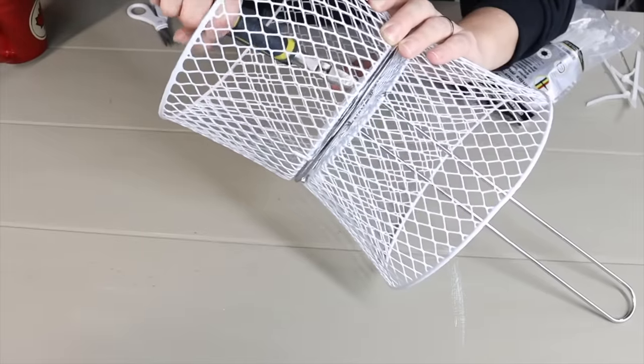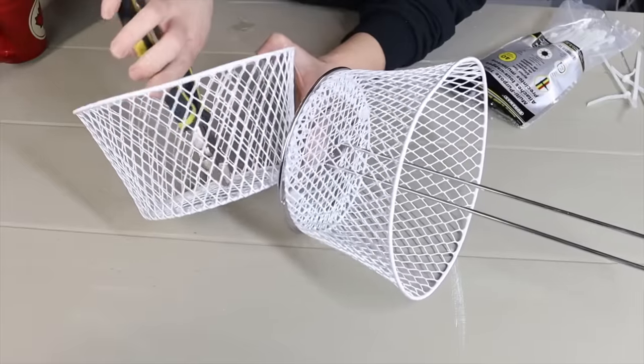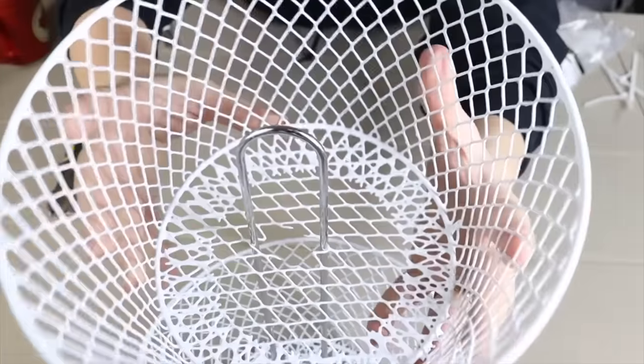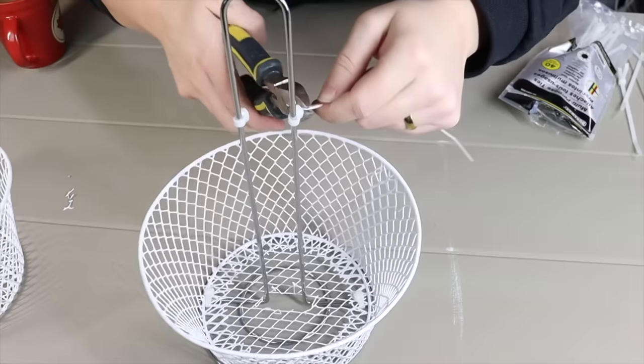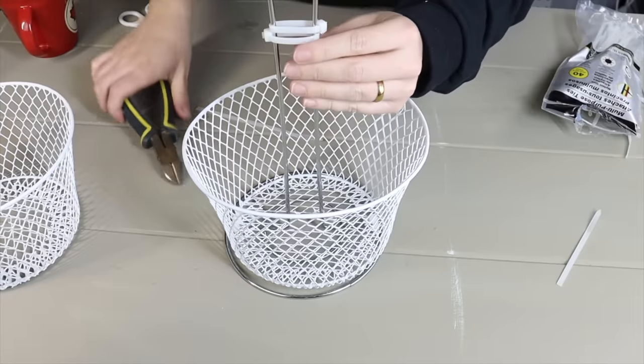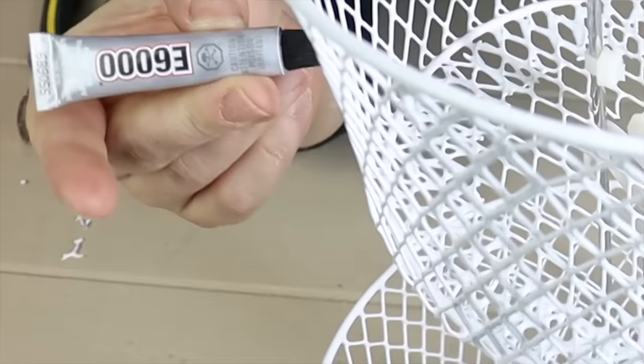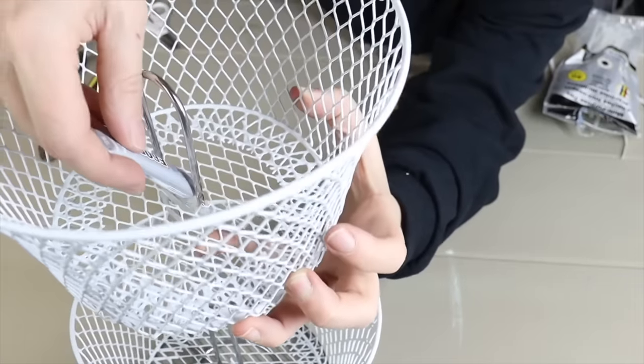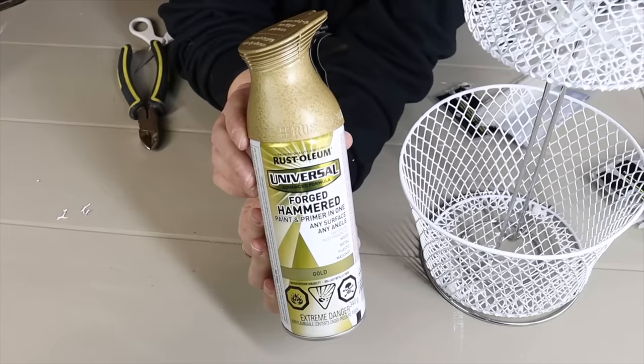Take your second wire basket and cut out the middle. Place it on your paper towel holder and place some zip ties around the paper towel holder to give it a little bit of a ledge to sit on. Then come in with some E6000 and spray paint it your favorite color.